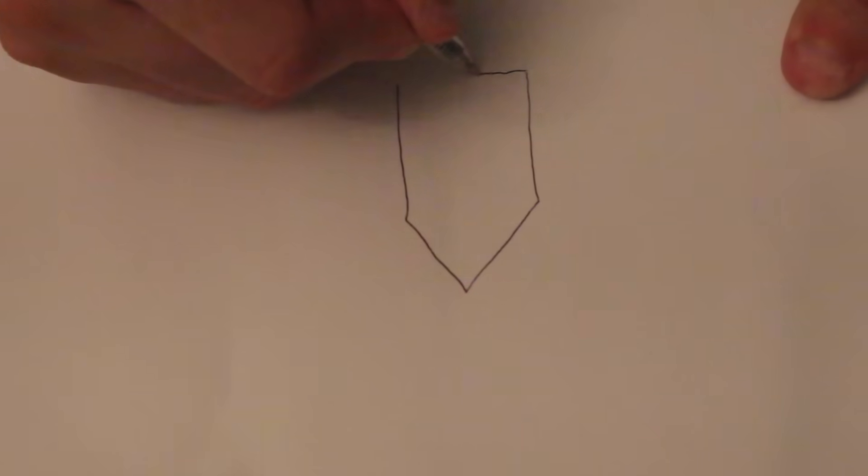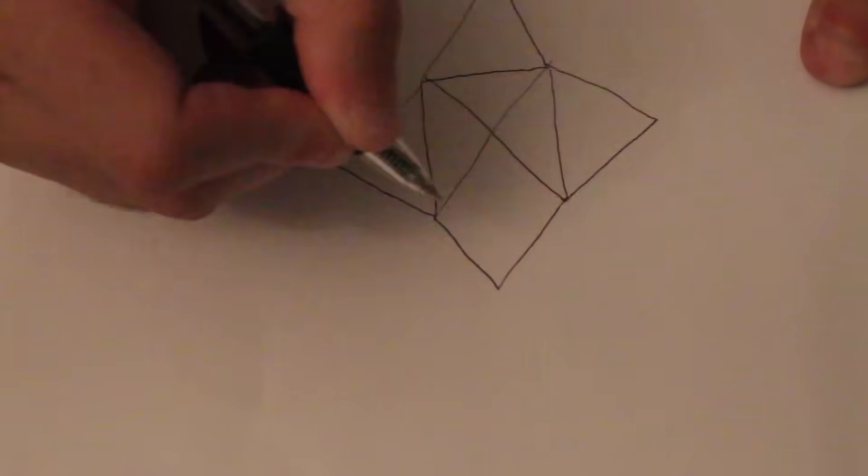But years later, while learning graph theory, I ran over this one theorem, then almost immediately took out a pencil and paper and drew the shape, which I still had in memory. I took a single look and realized finally, not only is it impossible to do, but I knew exactly why, and I want to explain that here.